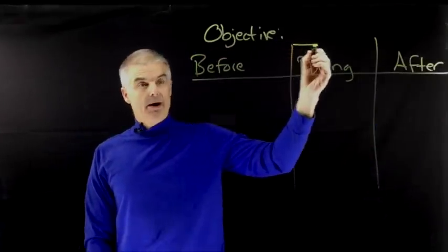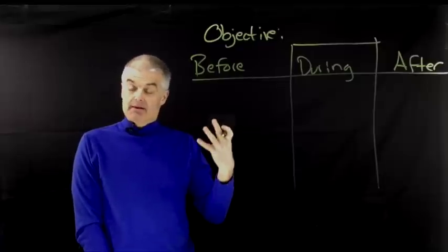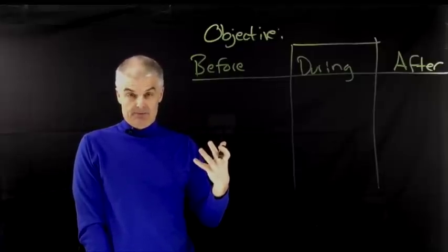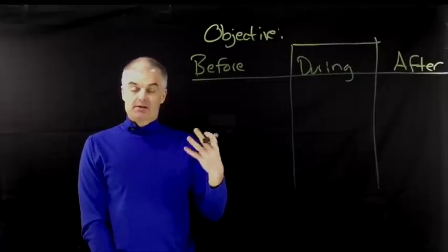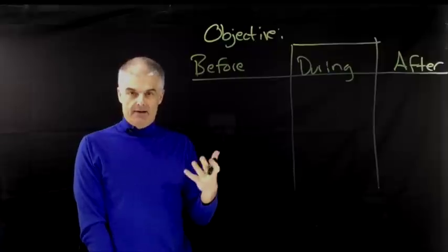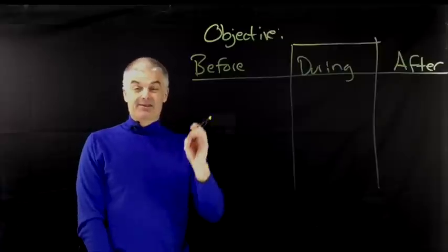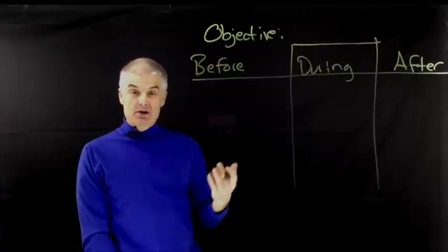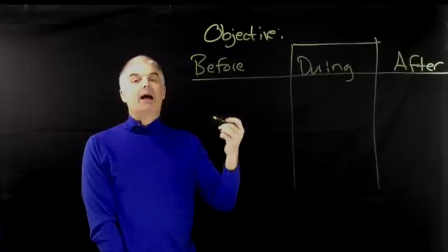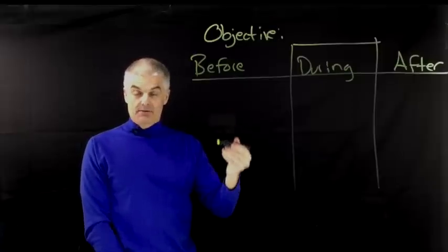So then I want you to write down an objective. Think about a very specific lesson that you might be teaching. Let's use a science example about lava, the stuff that comes out of the volcano. It turns out there are different kinds of lava. So my objective might be: distinguish between the different types of lava.